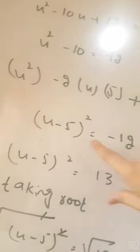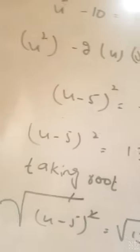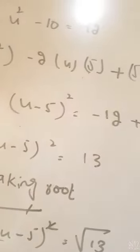So working through this, we get (x - 5)² on the left side. Adding 25 to both sides, we have (x - 5)² = -12 + 25, which gives us (x - 5)² = 13.